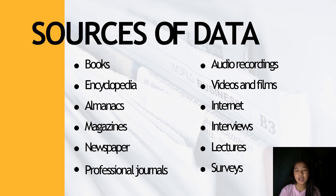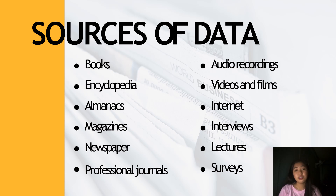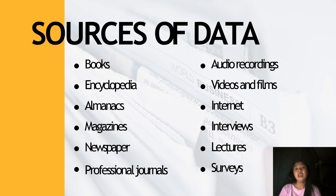Since we're talking about valid, reliable, and credible sources, here are the different sources of data that are available: books, encyclopedias, almanacs, magazines, newspapers, professional journals, audio recordings, video and films, internet, interviews, lectures, and surveys. Using credible and accurate sources enhances credibility and helps speakers strengthen their arguments, provide context, and engage the audience effectively.